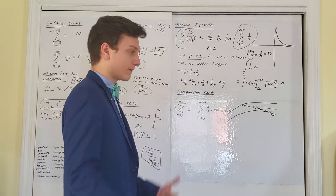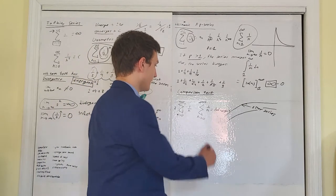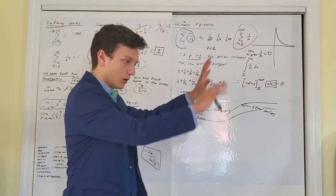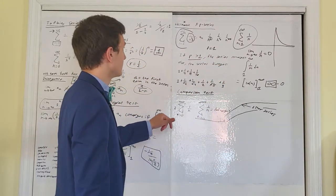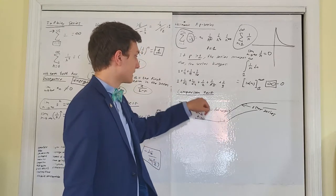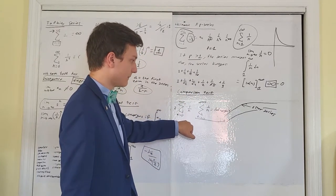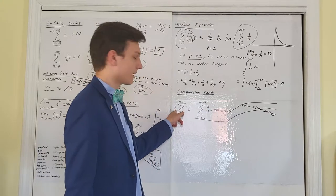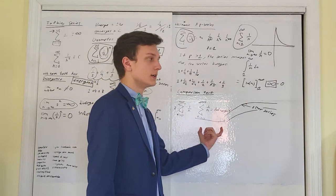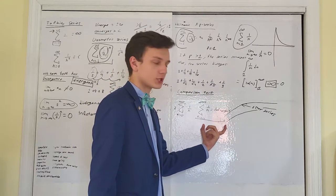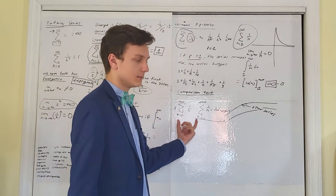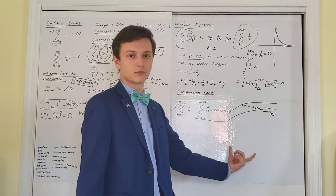If you use this on an FRQ, you need to: identify the series you're comparing it to, prove that series diverges using a test like p-series or integral test, and then prove that the given series is fundamentally larger than that — in this case by having a constant multiple of 2. The same would apply for convergence: identify a series, prove it converges, then show the given series is fundamentally less than that. Therefore it also converges.